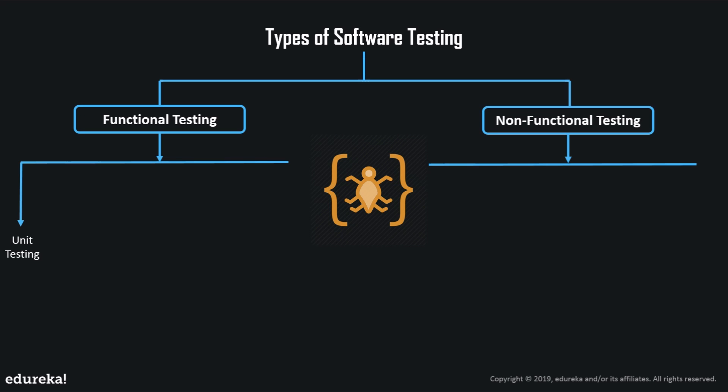If you want to integrate the entire process and test it rather than test unit by unit, we use integration testing, where individual units are combined and tested as a group. If you want to test the entire system as a whole, we use system testing, which is a series of different tests whose sole purpose is to exercise the entire computer-based system. Interface testing verifies whether the communication between two different software systems is done correctly.